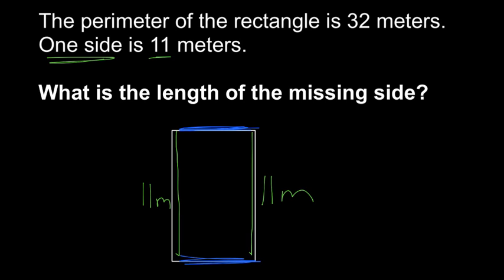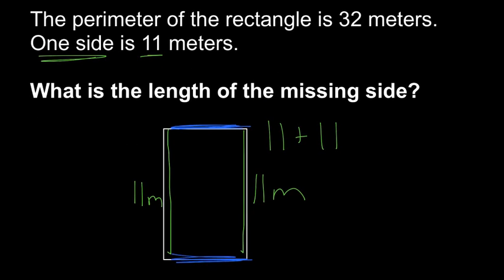Well, again, we know we have a perimeter of 32 meters. We're told right here the perimeter is 32 meters. So the question is 11 plus 11 for these two sides,